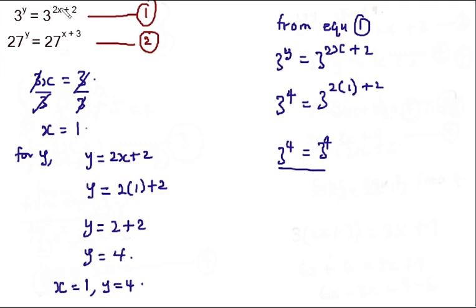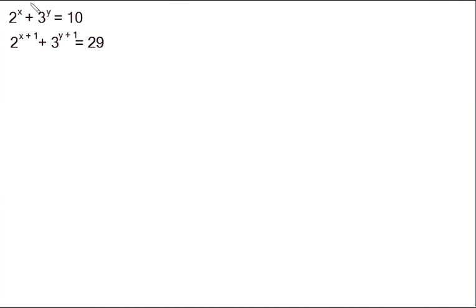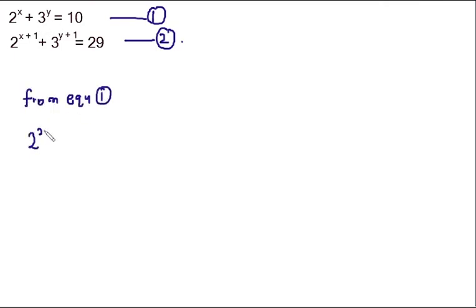For example two, the question is a bit different because the base numbers are not equal. Calling the first equation one and the second equation two, the first step is to simplify into linear equations. From equation one we have 2^x + 3^y = 10. We cannot break these into smaller terms and we have two different bases, so we need to assign substitution variables.